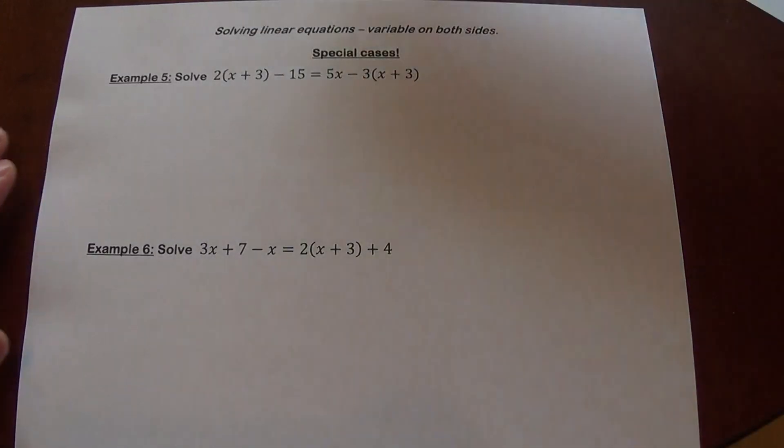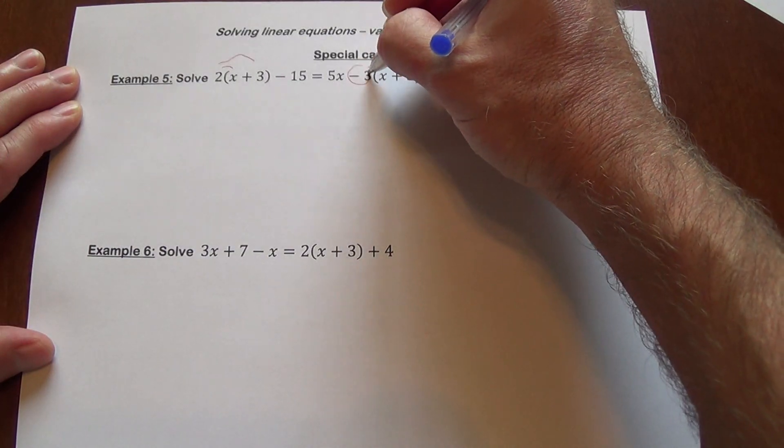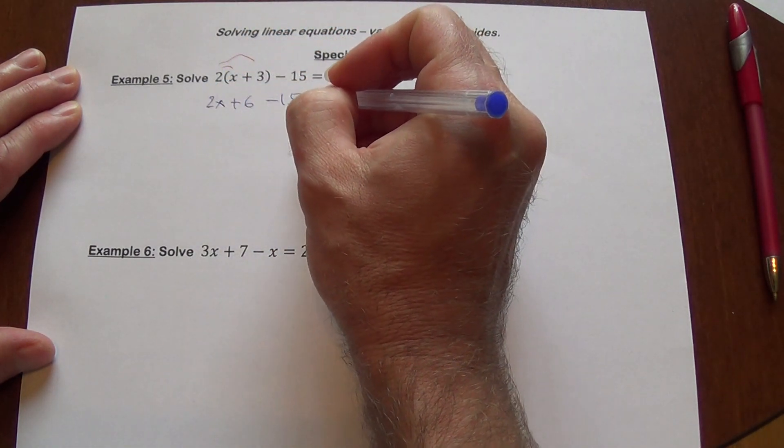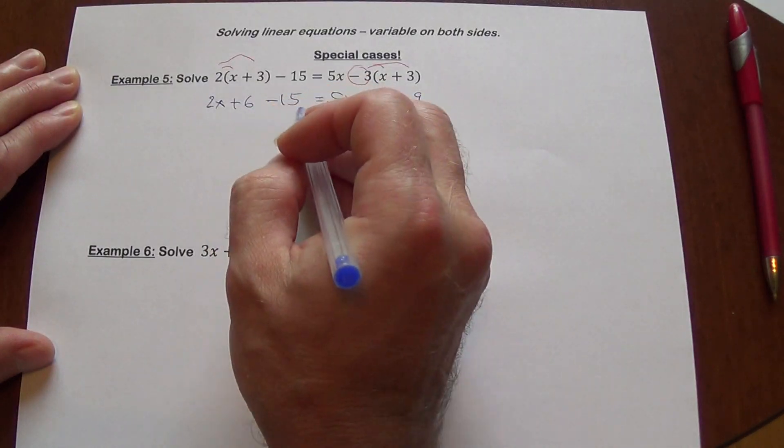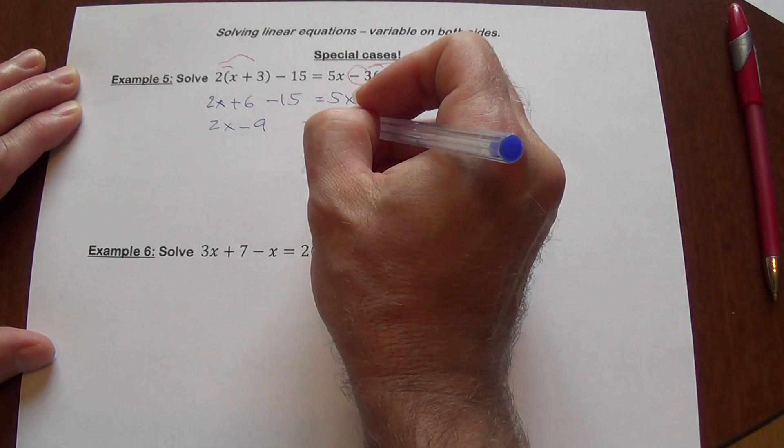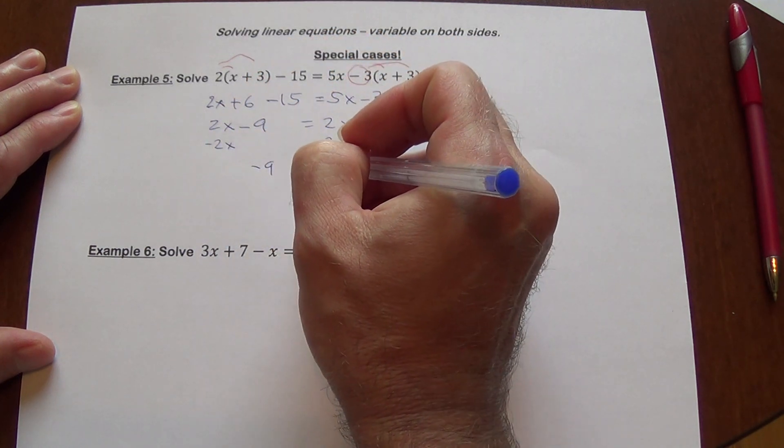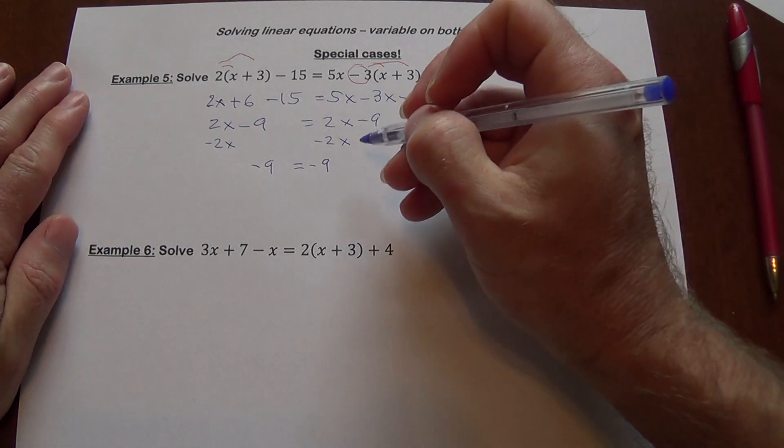We have two more examples that are going to be special cases. So let's take a look at this. First problem you see that we have to distribute 2. And here we have to distribute negative 3. So 2x plus 6 minus 15 equals 5x minus 3x minus 9. 6 minus 15 here can be combined. We have 2x minus 9. 5x minus 3x will give you 2x minus 9. So if I take care of this now, this is going to give you an interesting outcome, kind of unexpected. This is where sometimes students get puzzled because they don't know how to proceed from here. What you have here, this is a true statement.